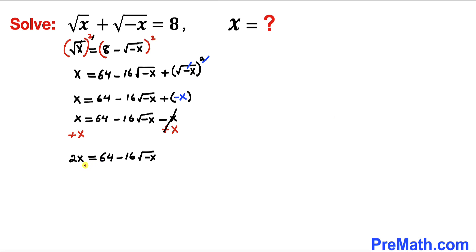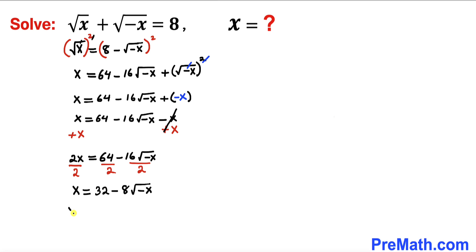Now we can see that this equation is divisible by 2 across the board. So let me go ahead and divide each and every term by 2. So therefore we are going to get x equals to 32 minus 8 times square root of negative x. Now let's go ahead and move this 32 to the left hand side, so therefore we end up with x minus 32 equals to negative 8 times square root of negative x.